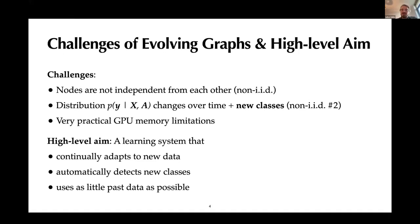And third issue is that we have very practical limitations of GPU memory. So if you've ever worked with graph neural networks, unfortunately, most of them assume that they can put the entire graph just in the GPU memory. And when you want to work with large-scale data, that doesn't work anymore. There are techniques for batching, but it's much more complicated than if you have independent examples. So what we want is some kind of learning system that continually adapts to new data, automatically detects new classes, and uses as little past data as possible.